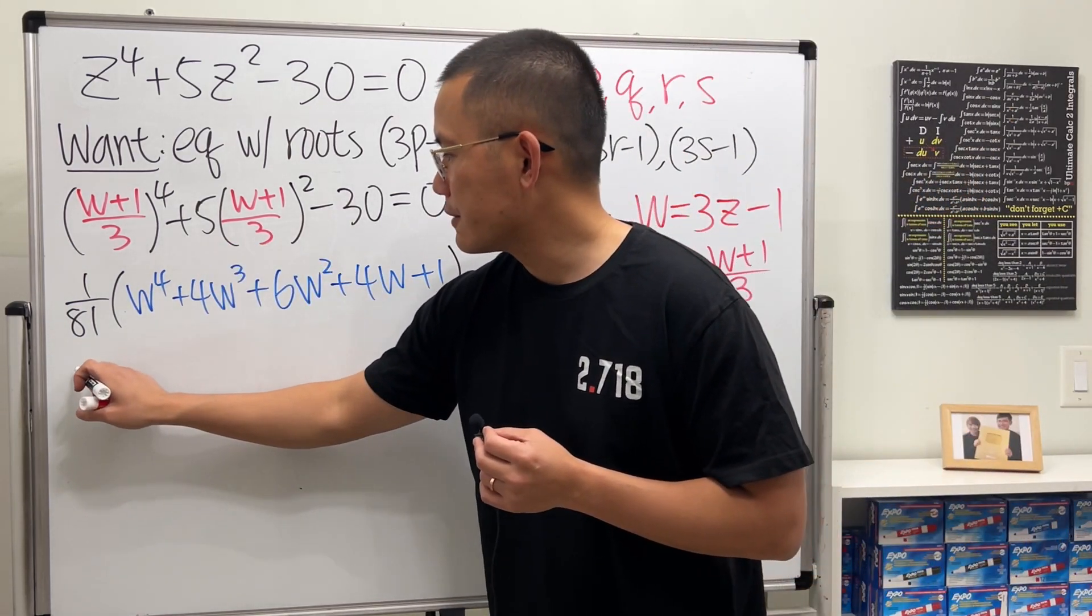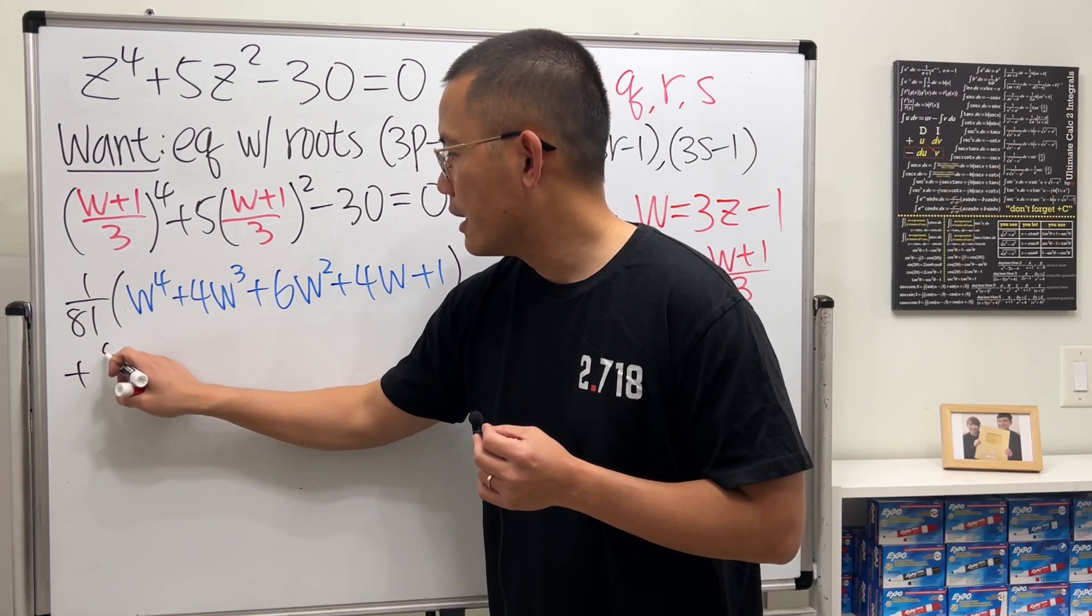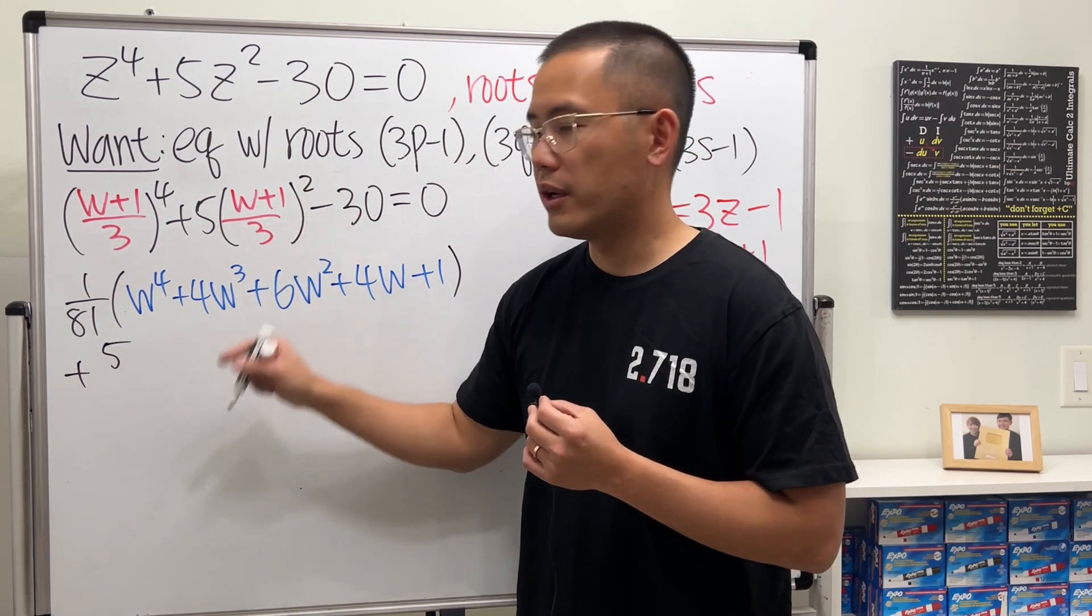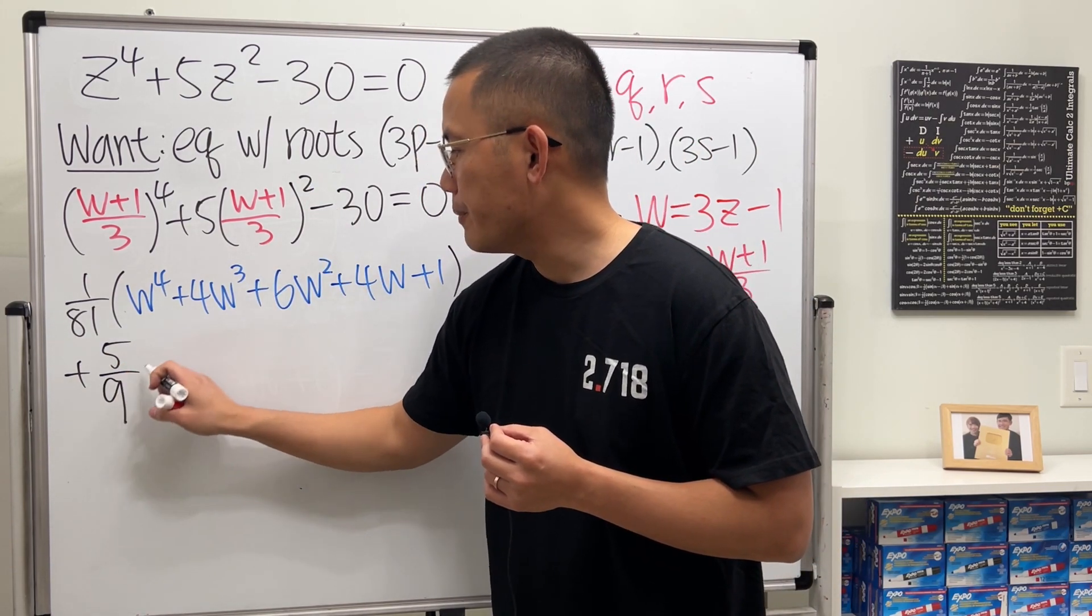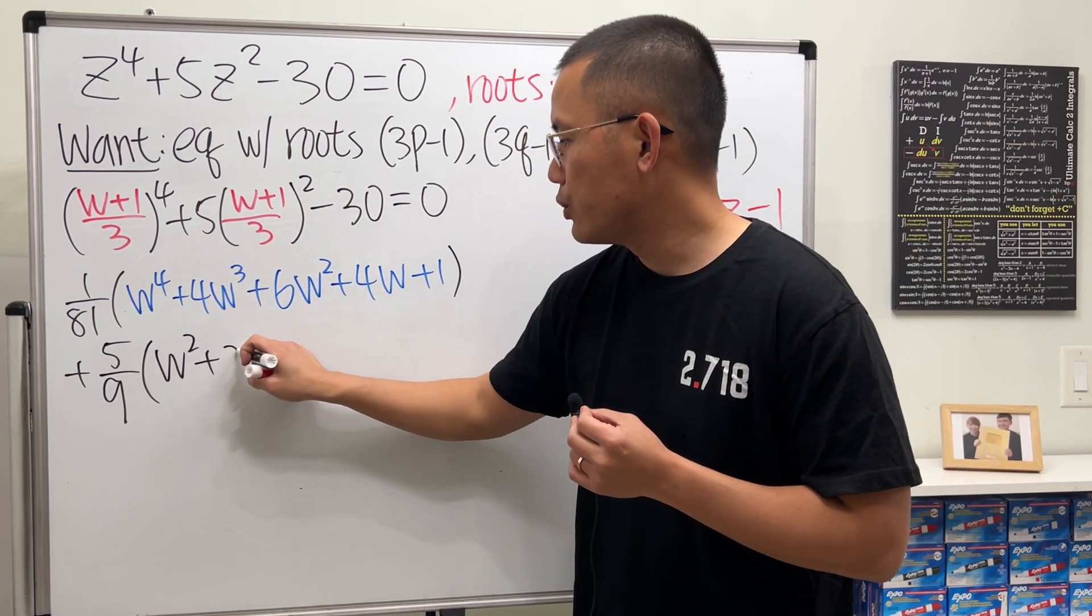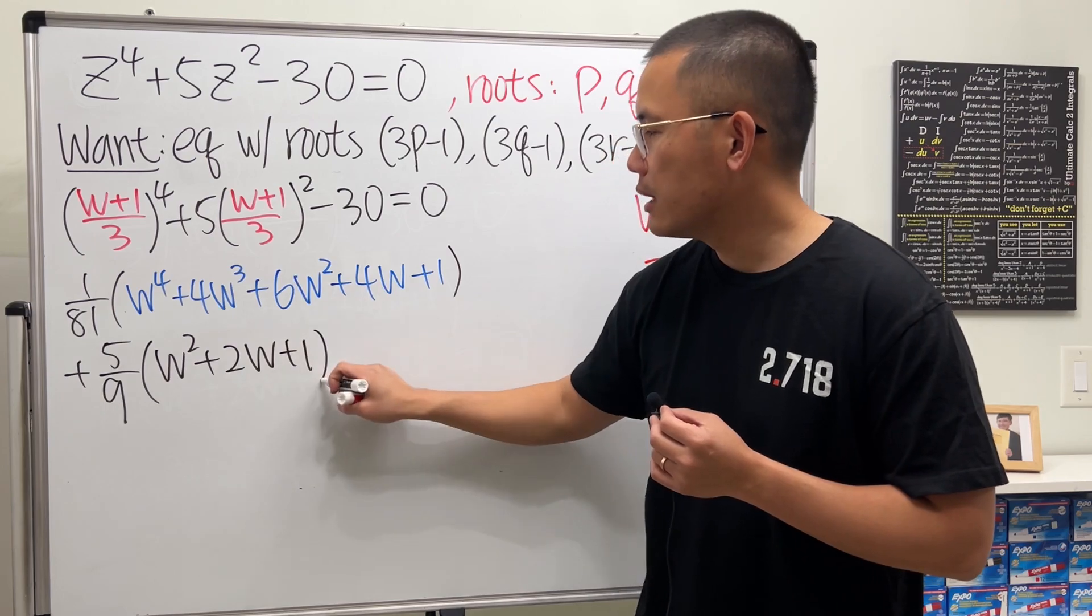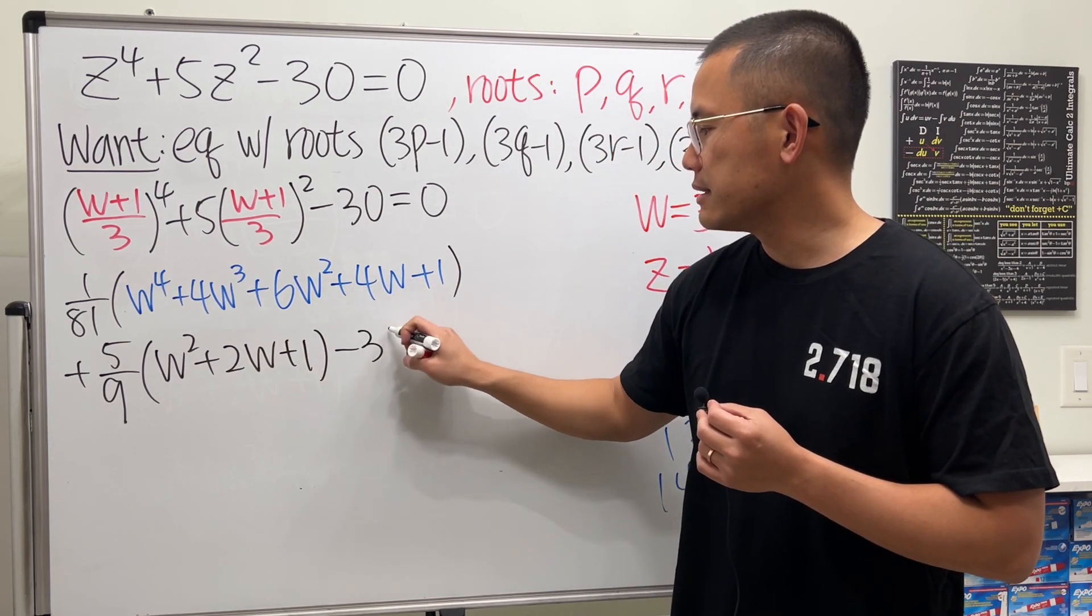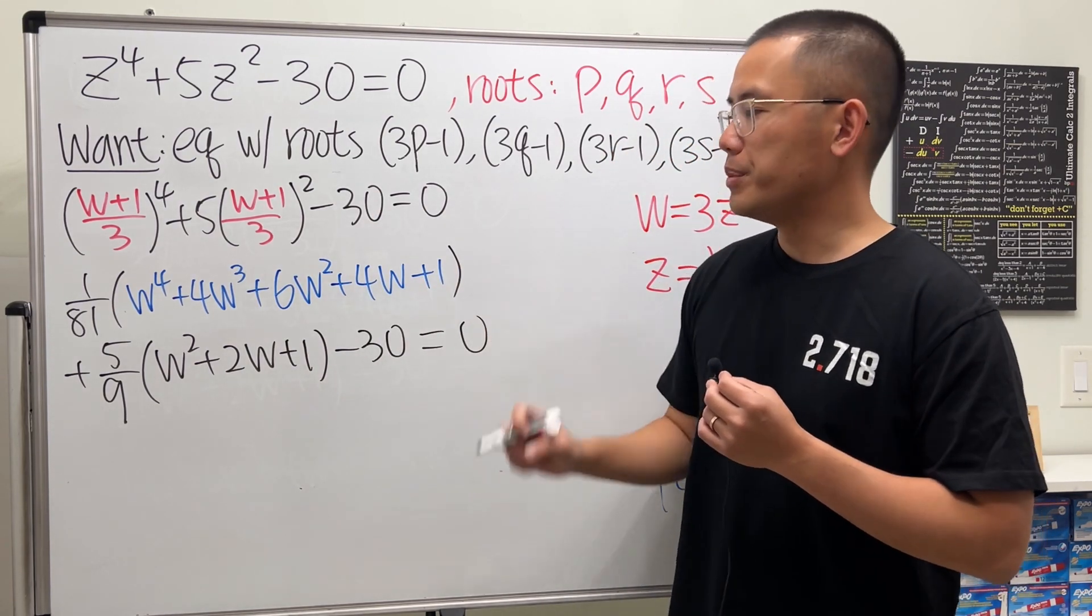Then, we still have the plus 5, and then here we have 3 squared, which is 9. Let me put it right here, and then (w + 1)^2, that's just w^2 + 2w + 1, and then finally, we have the minus 30, and all that should be equal to 0.